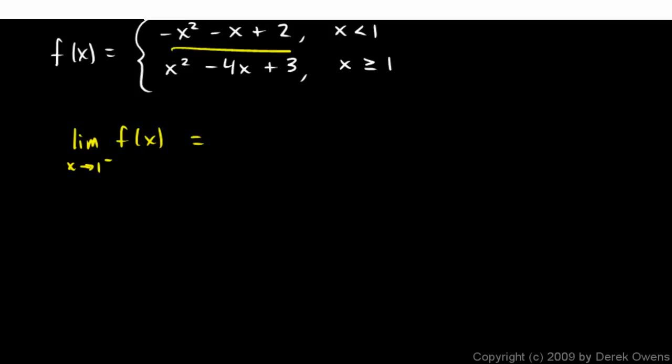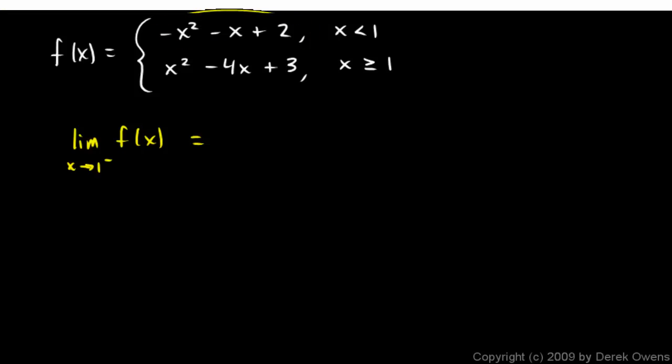So we're getting really close to a value using this polynomial with a 1 plugged in. So it's going to be negative 1 squared minus 1 plus 2.